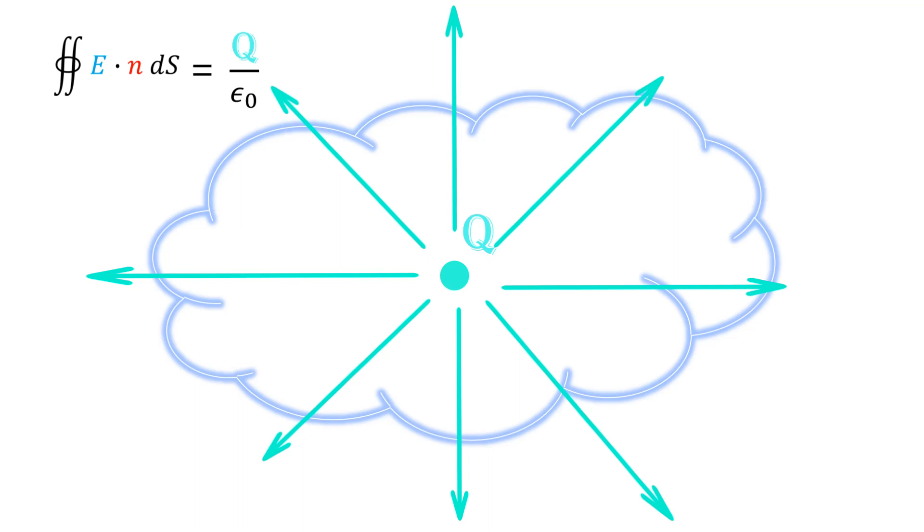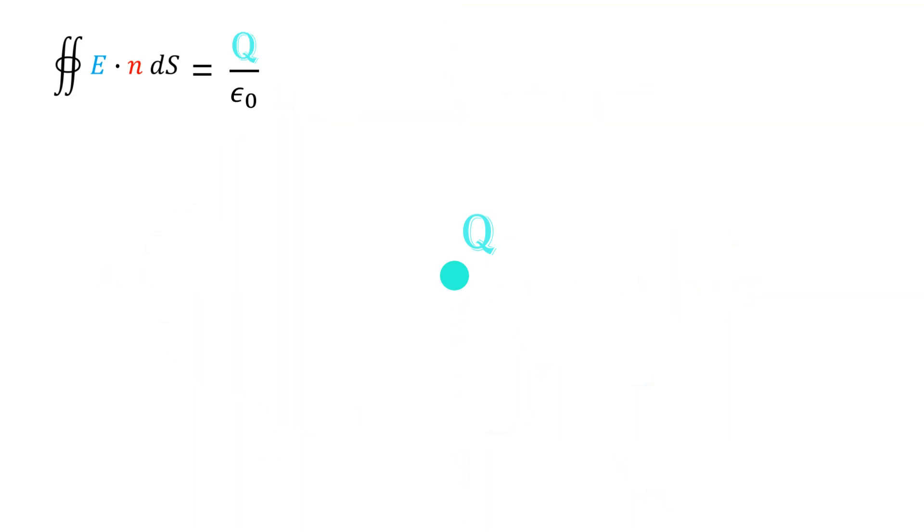However, without any hole on the cloud, the result is plus Q divided by ε₀. Anyway, as we saw in the procedure of calculating the flux, we know that the ball is the most proper form of closed surface for us to calculate the integral formula much more easily, at least with this point charge.